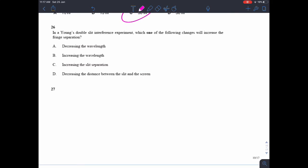In the Young's double-slit experiment, how can we increase the fringe separation? Well, our double-slit equation is s equals lambda D over d, where the fringe separation is s. And so we would either increase lambda, increase big D, or decrease little d. The only option there that agrees with that is B, increasing the wavelength.